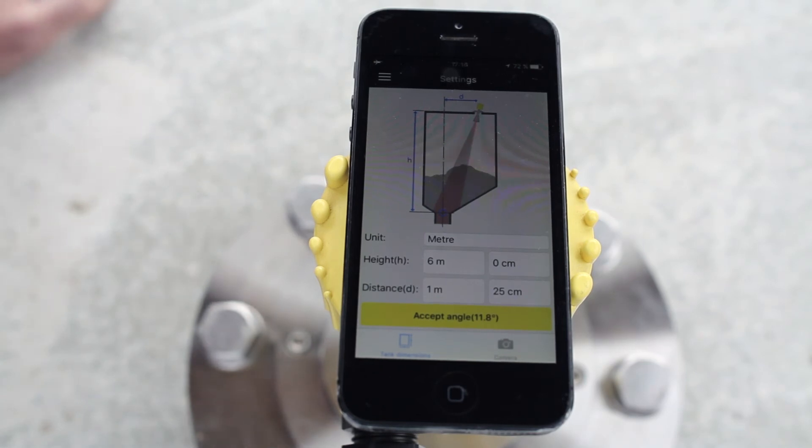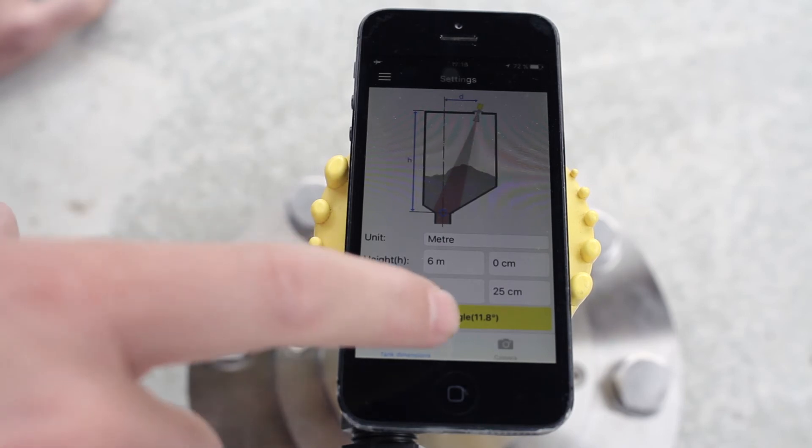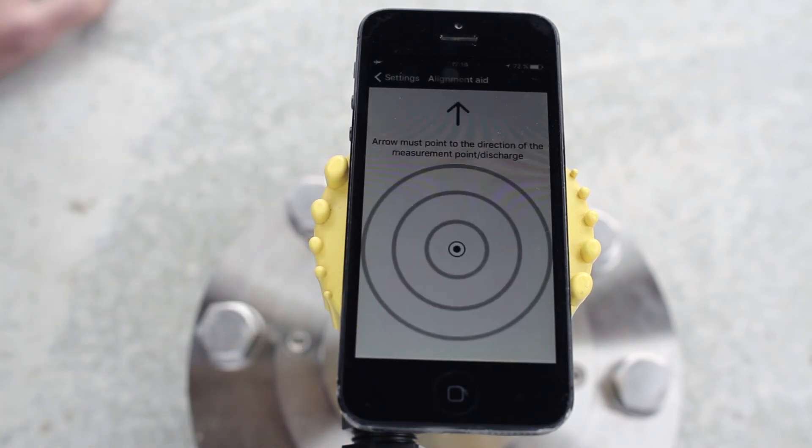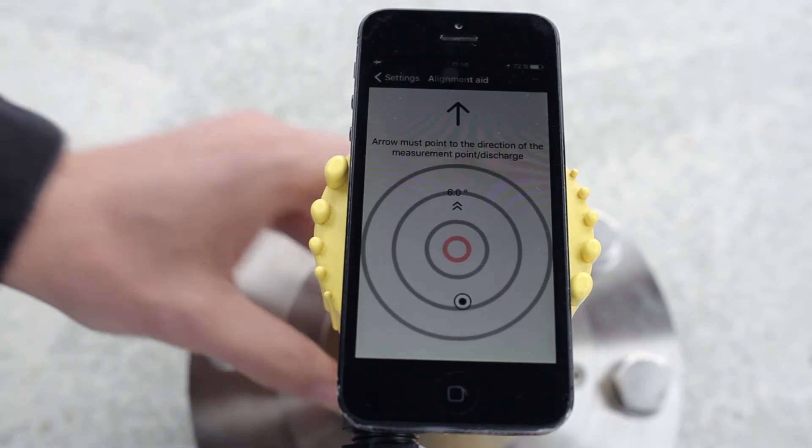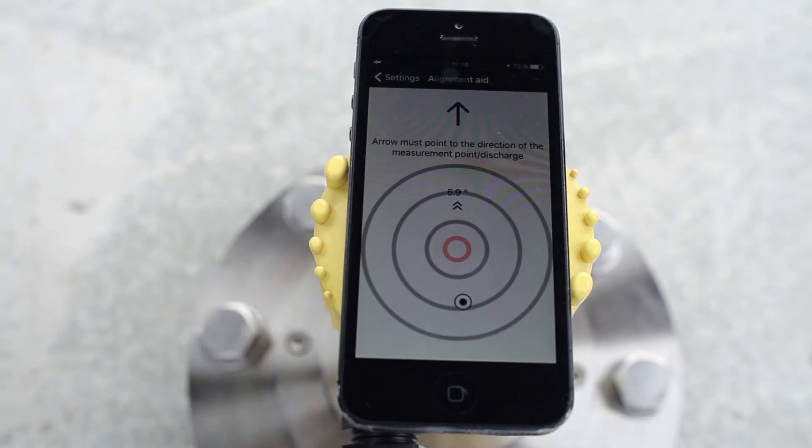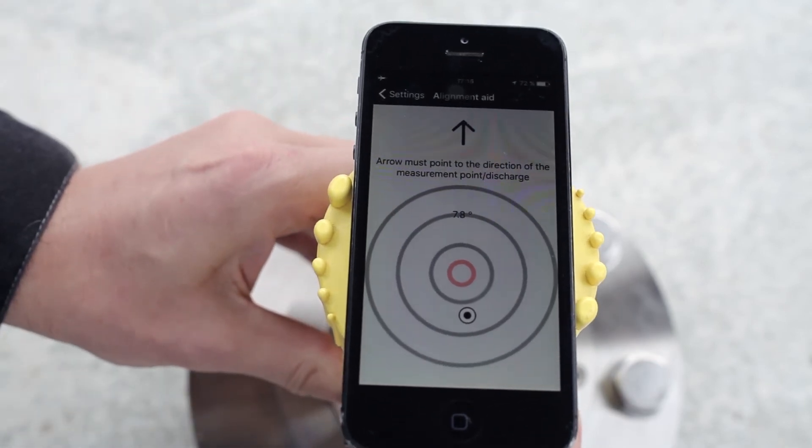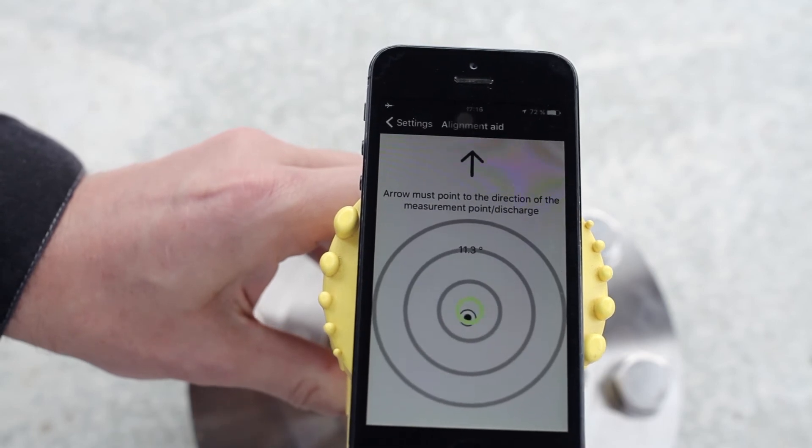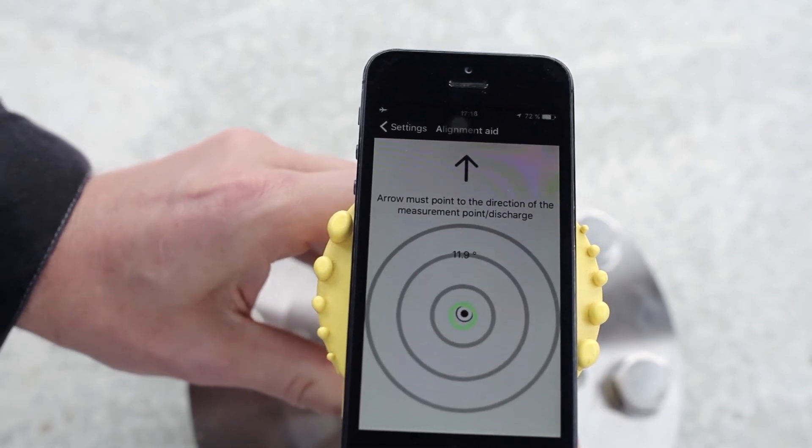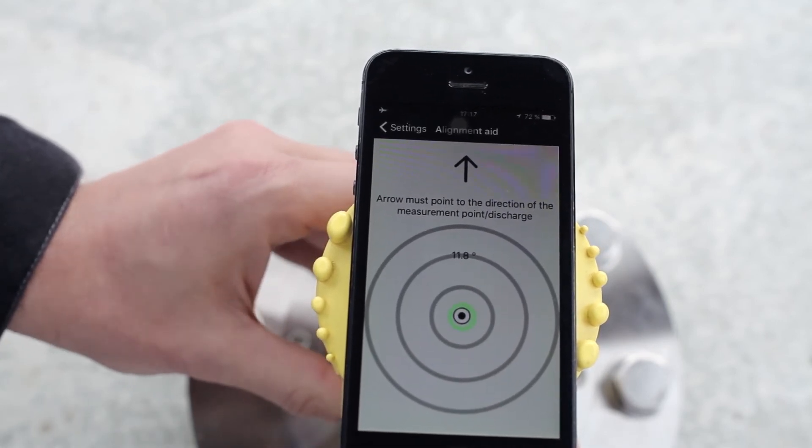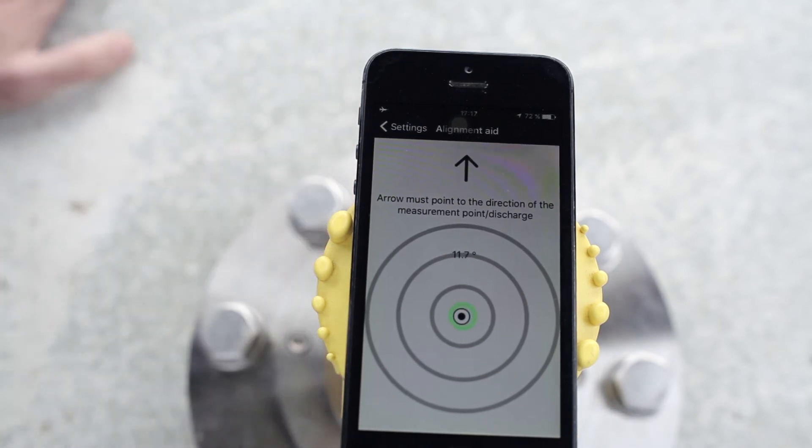With this information, the app is calculating an angle you see it here, and then you can just press accept angle and then you're in the alignment aid. Now you have to look that the arrow is pointing to the middle of the silo, and then you can align the sensor until it is in the goal and it's getting green. This is the perfect setting for the sensor. So fix the screws and the sensor is adjusted.